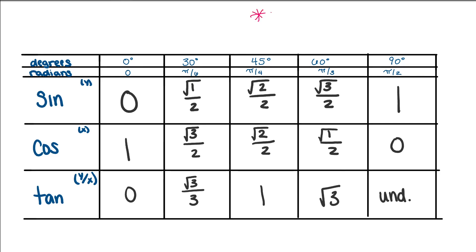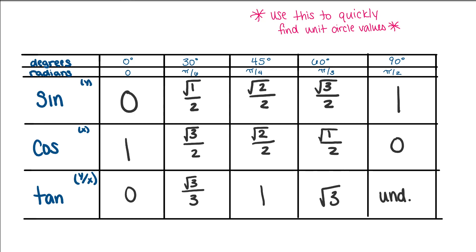So using this chart, you can find your unit circle values. Just remember: 0, 1, 2, 3, 1 for sine and 1, 3, 2, 1, 0 for cosine — then just take those fractions for tangent. The best thing to do is to practice writing out this chart, memorize it, and if you know this chart, then you can fill in the entire unit circle.